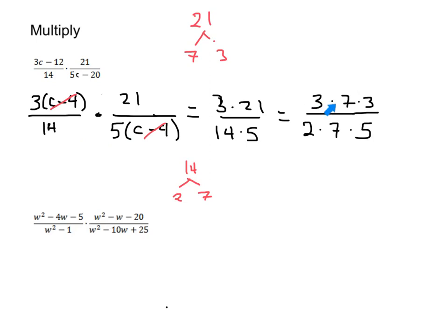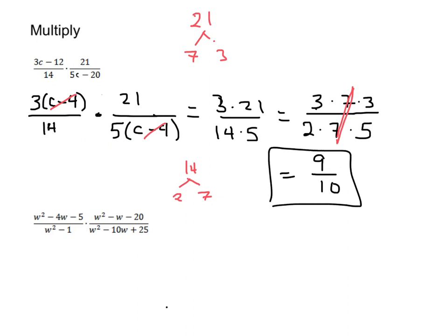This is how we simplify numbers when we just have numbers left over. We can see that there's a 7 on the top and the bottom, so we can go ahead and cancel those out, and then we're just going to multiply across. After we cancel those 7s out, we have 3 times 3, which gives us 9, and 2 times 5 gives us 10. And that's our final answer for that one.